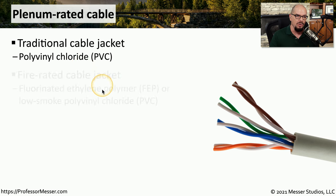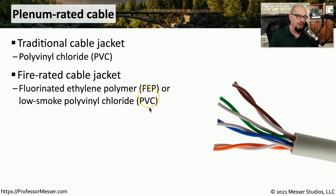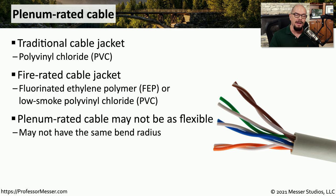A traditional network cable has a jacket usually made of PVC — polyvinyl chloride. A plenum-rated cable jacket uses a fluorinated ethylene polymer (FEP) or a low-smoke polyvinyl chloride. These are designed for the plenum, and if you get a plenum-rated cable, it will be one with FEP or low-smoke PVC. Unfortunately, the fire-resistant materials make it less flexible than a non-plenum-rated cable, so it's important to plan for that limited bend radius when designing where you'll put your cables.